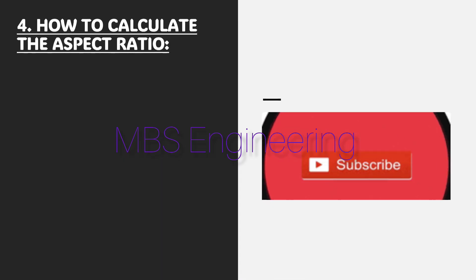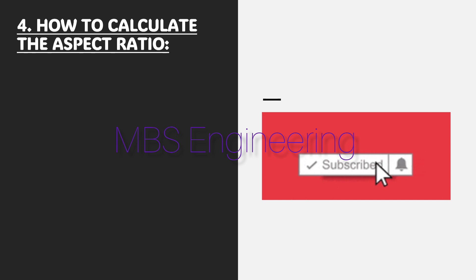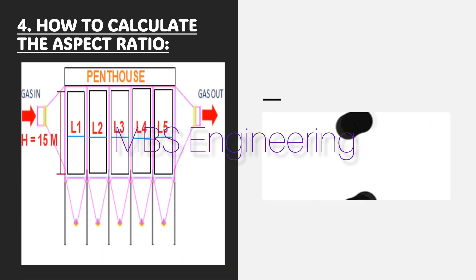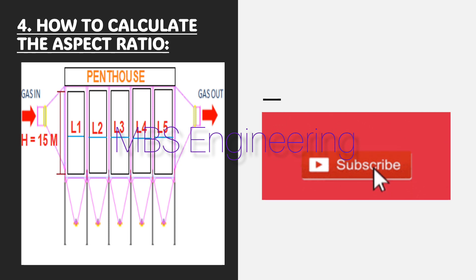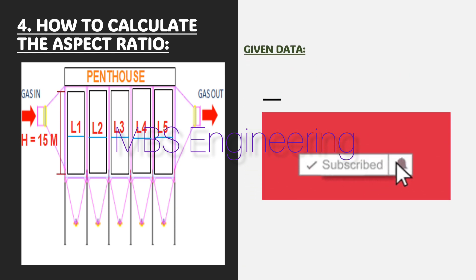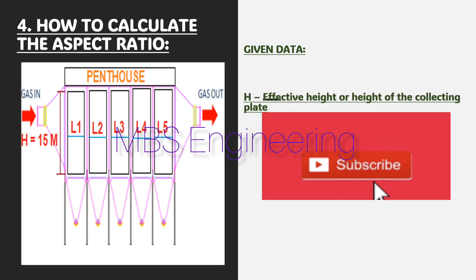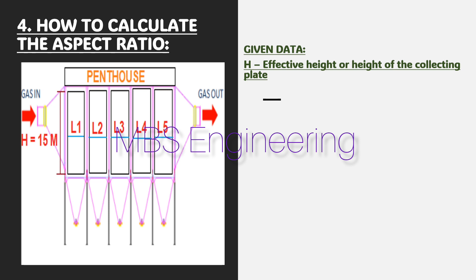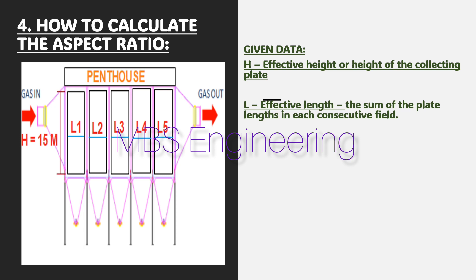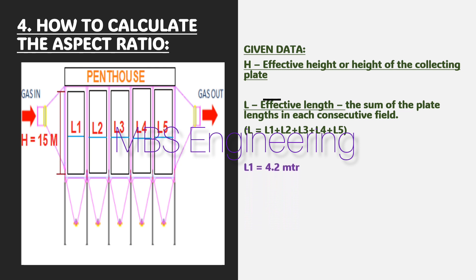Next, we are going to understand how to calculate the aspect ratio in the ESP. The aspect ratio equals effective length in meters divided by effective height in meters. H is the effective height or height of the collecting plate. L is the effective length — the sum of the plate lengths in each consecutive field. Please refer to the ESP schematic layout for better understanding — a 5 consecutive field ESP schematic layout is given.